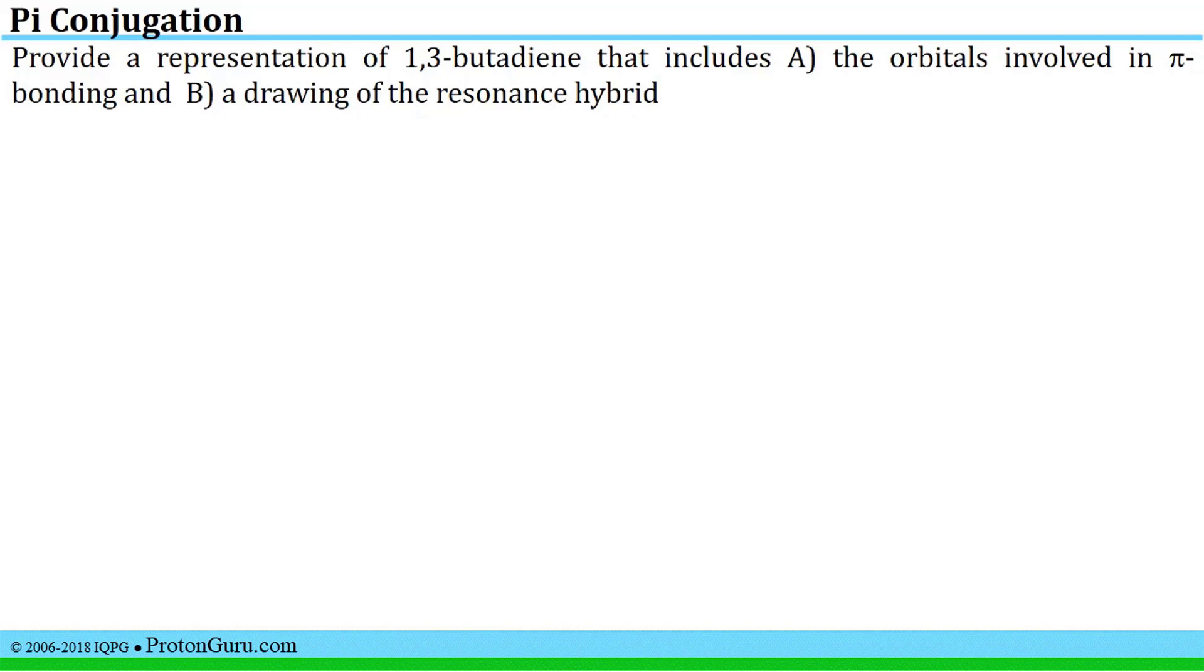Here's an example of one type of problem. Provide a representation of 1,3-butadiene that includes A, the orbitals involved in pi bonding, and B, a drawing of the resonance hybrid.